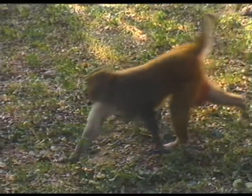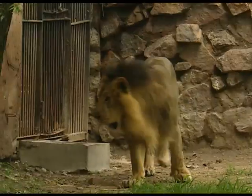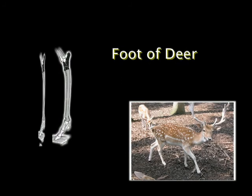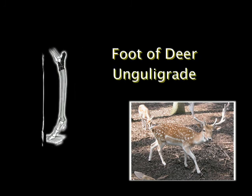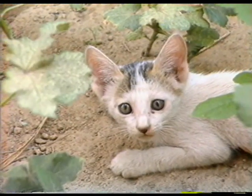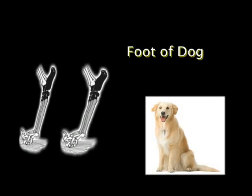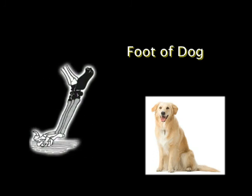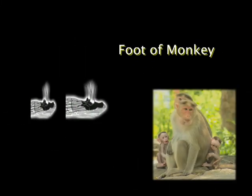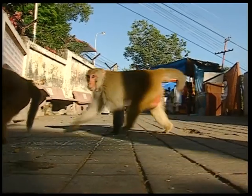Notice the foot of deer, tiger, cat, lion and monkey. Deer walks and runs on tips of toes or hooves touching the ground — hoofed mammals are known as unguligrades, or those who walk on tips of toes. Lion, tiger, cat and dog walk and run on toes, which are known as digits, so these animals are known as digitigrades. Monkeys are plantigrades as they walk on the entire sole of the foot.